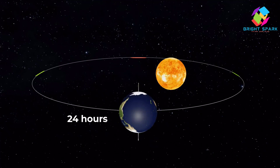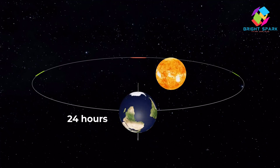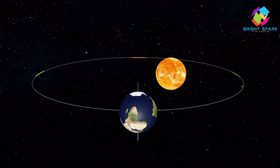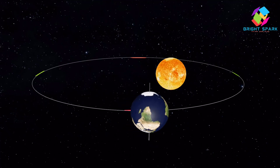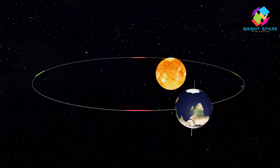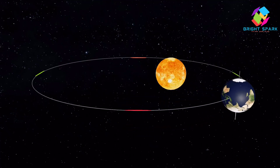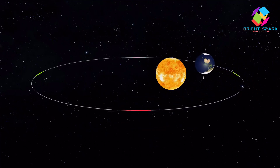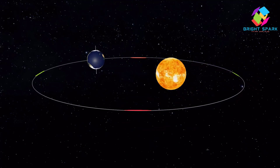The earth doesn't just sit still — it goes around the sun. That's called revolution. And guess what? The earth takes one whole year to make a full trip around the sun.